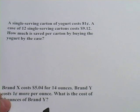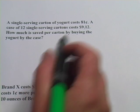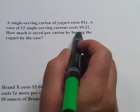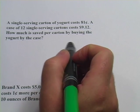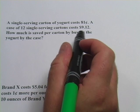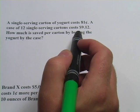All right, let's look at the next one. It says a single serving carton of yogurt costs $0.81. A case of 12 single serving cartons costs $9.12. How much is saved per carton by buying the yogurt by the case? So is it worth it to buy the whole case rather than buy a bunch of single servings? That's what we're trying to figure out here.